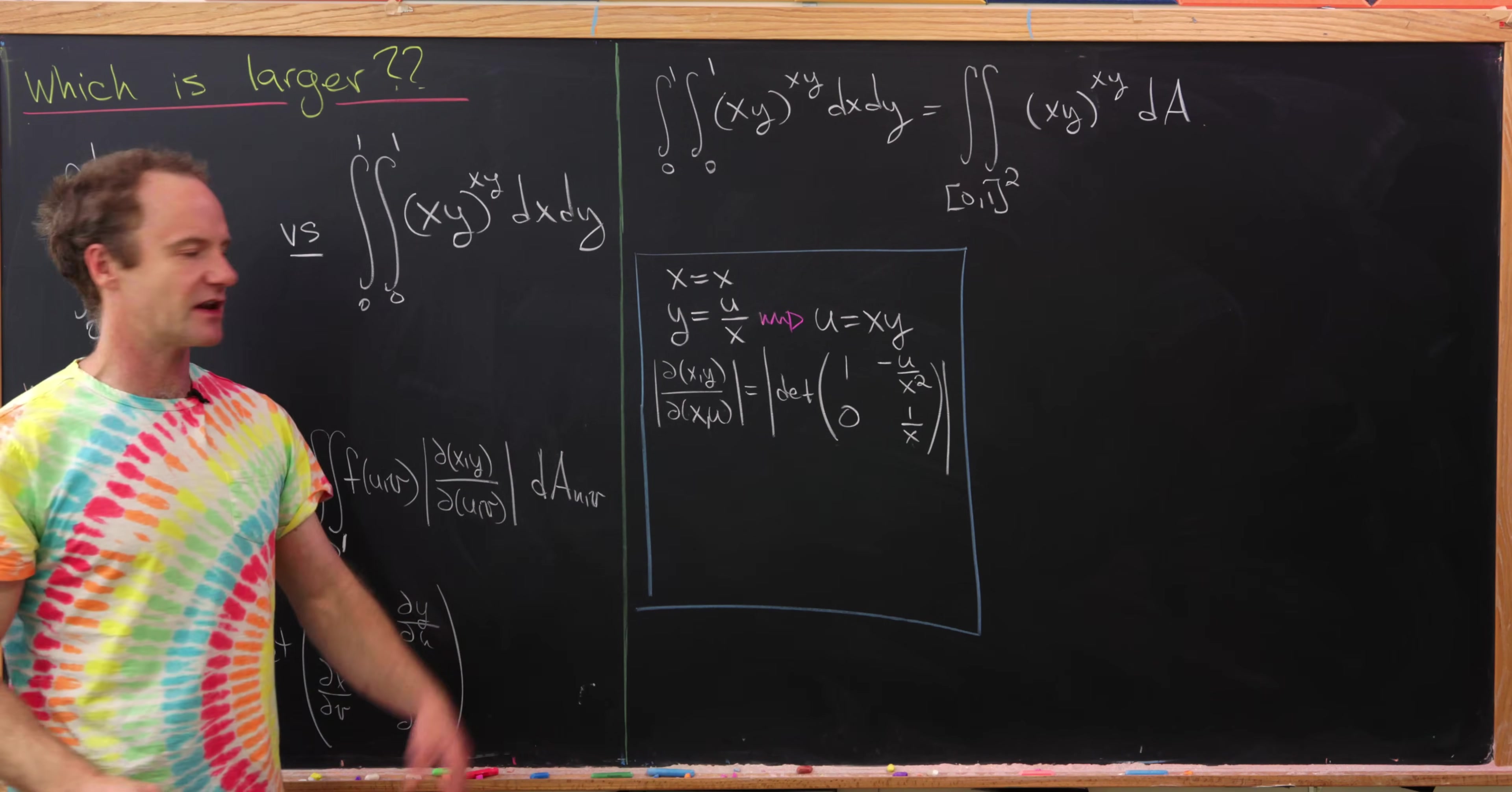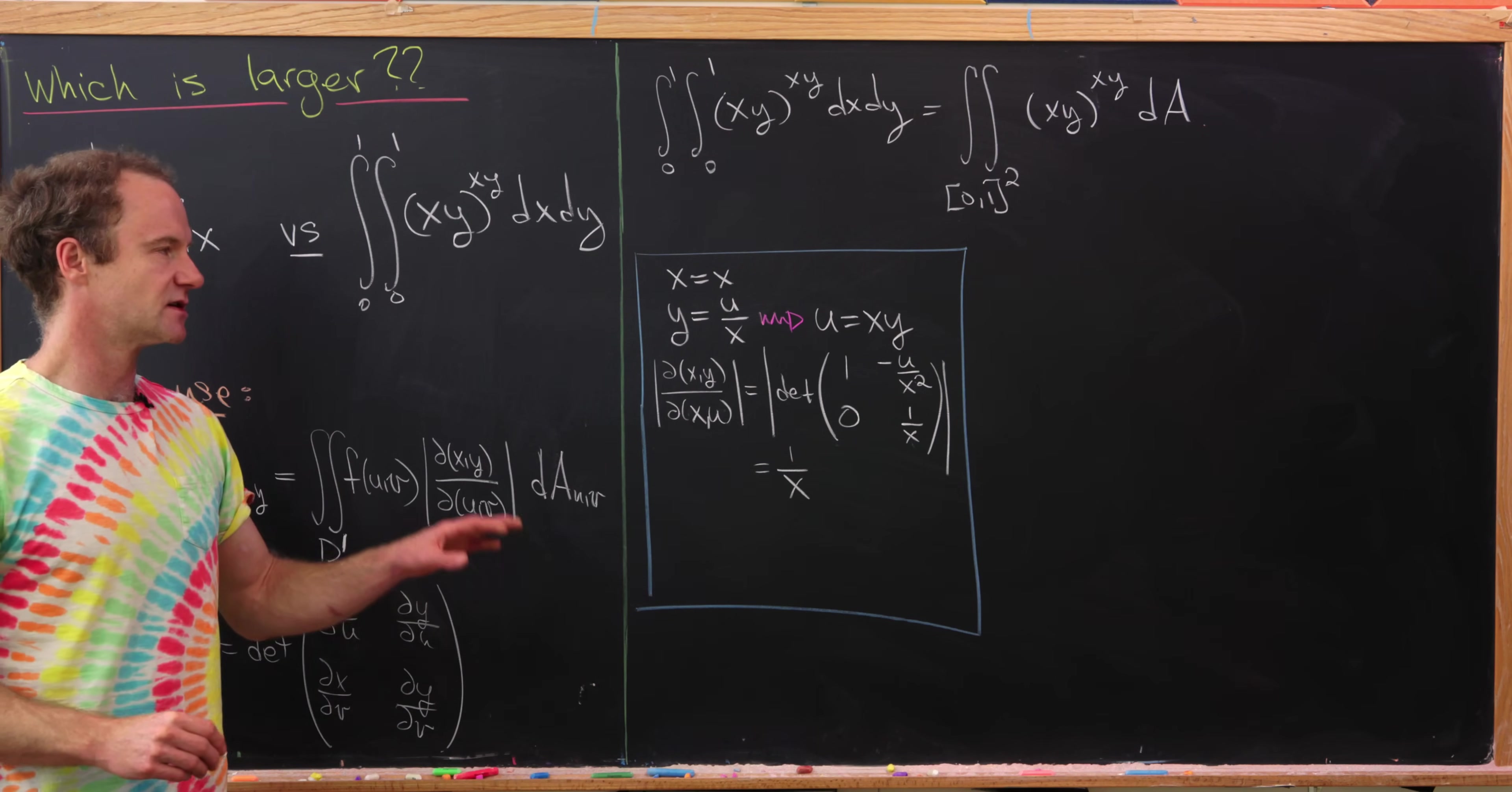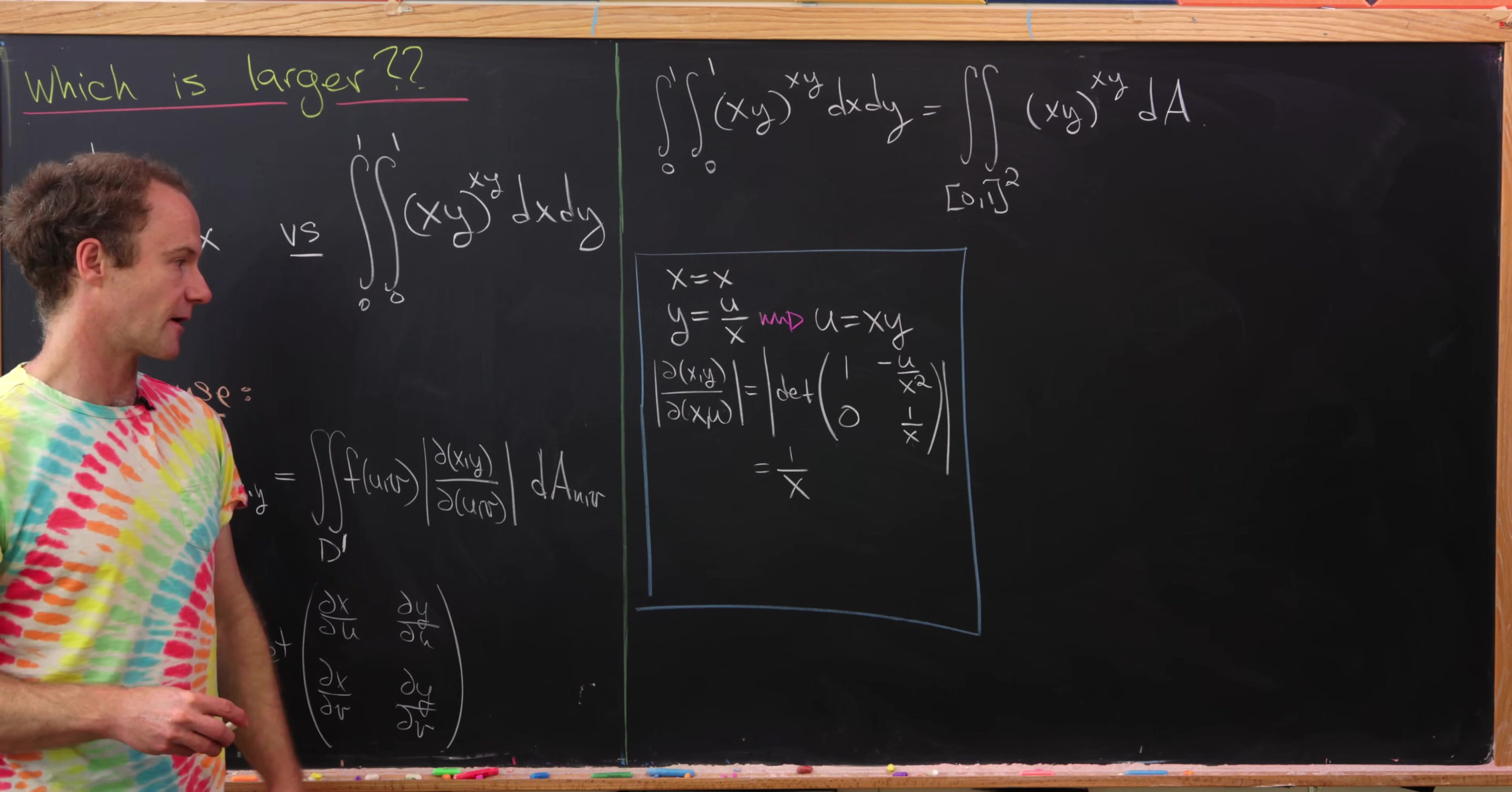Great. So now taking the determinant of that, we pretty clearly see that it's equal to 1 over x. You might say it's the absolute value of 1 over x, but since we're on this unit interval squared, it's always positive, so we're okay there.